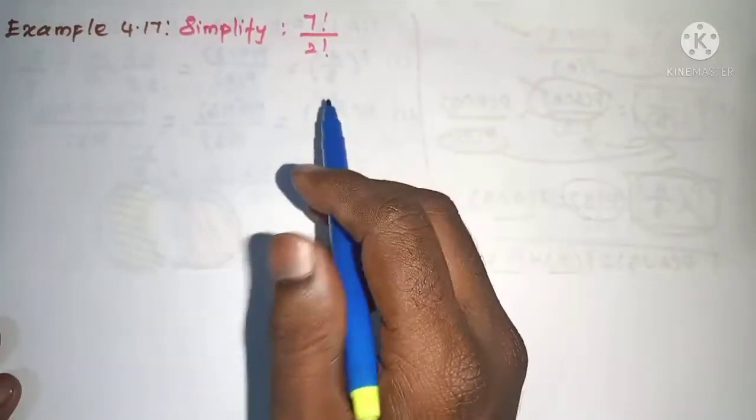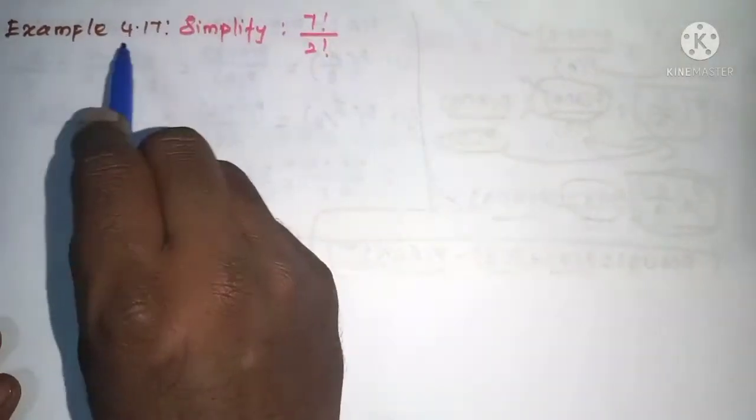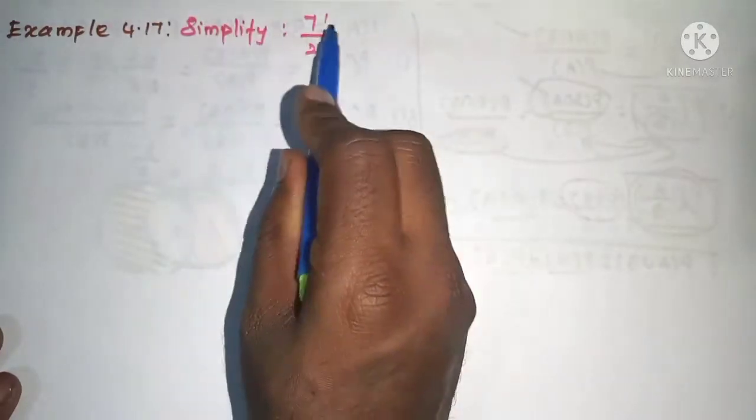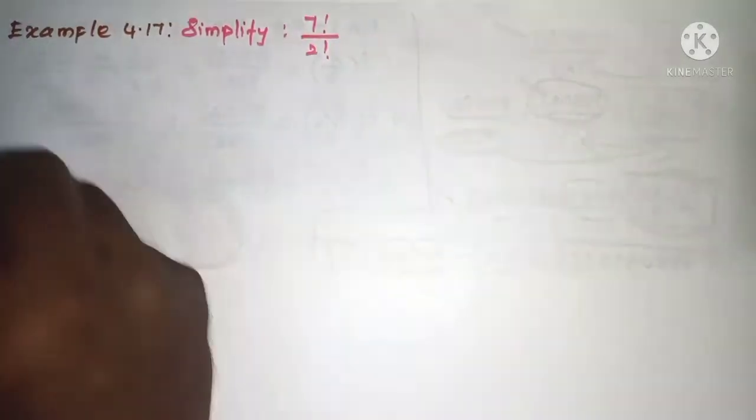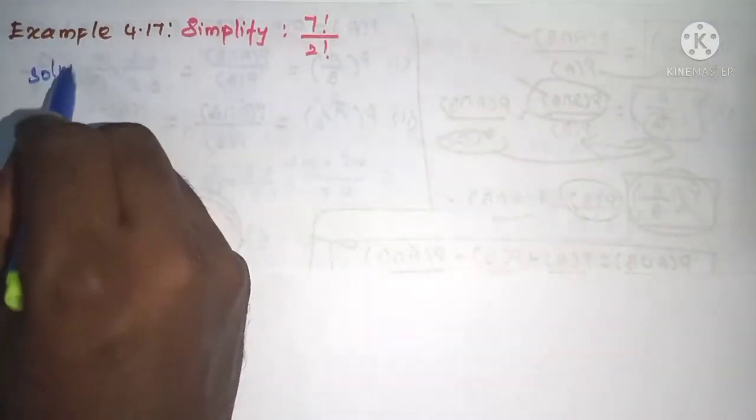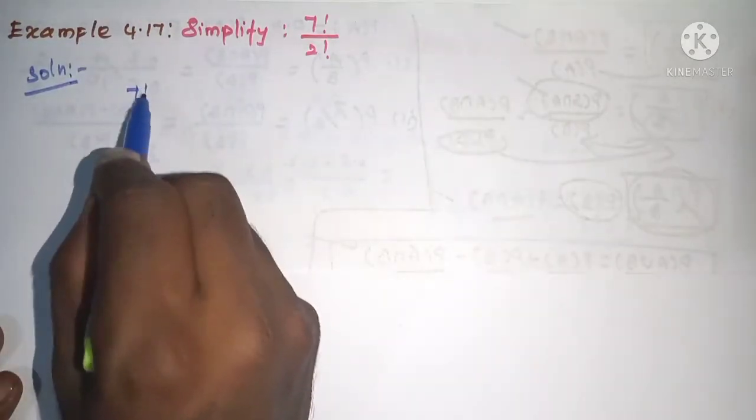Hi student, this is Silama Max tuition, 11th standard, example 4.17: simplify 7 factorial divided by 2 factorial. See solution: 7 factorial divided by 2 factorial.